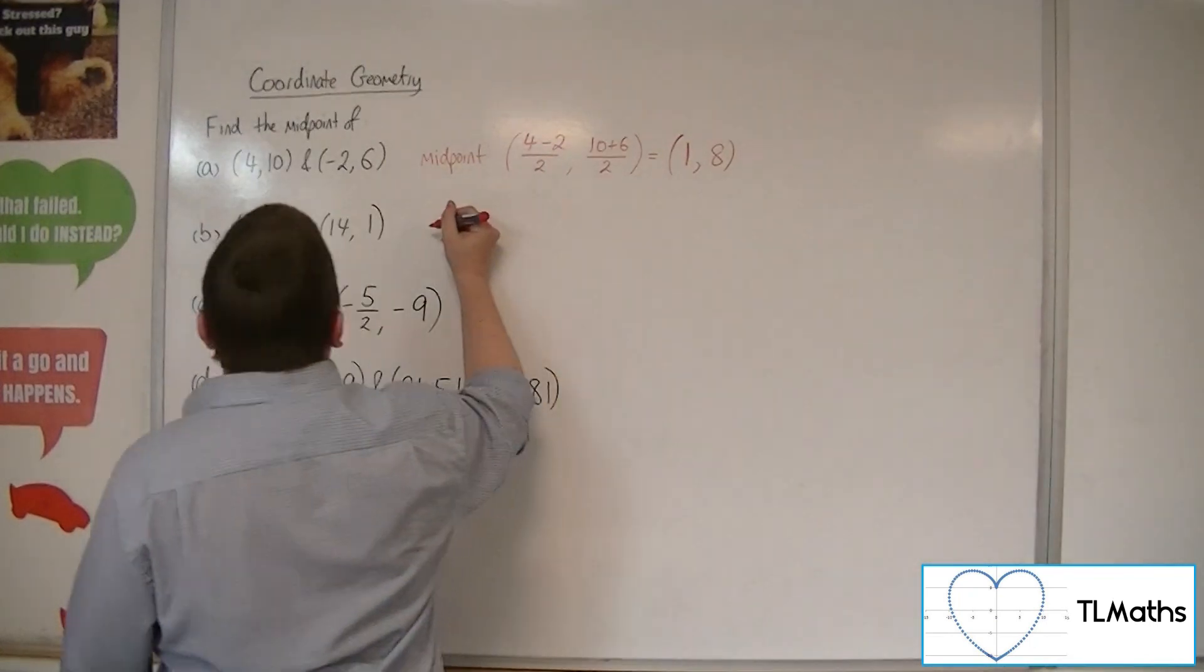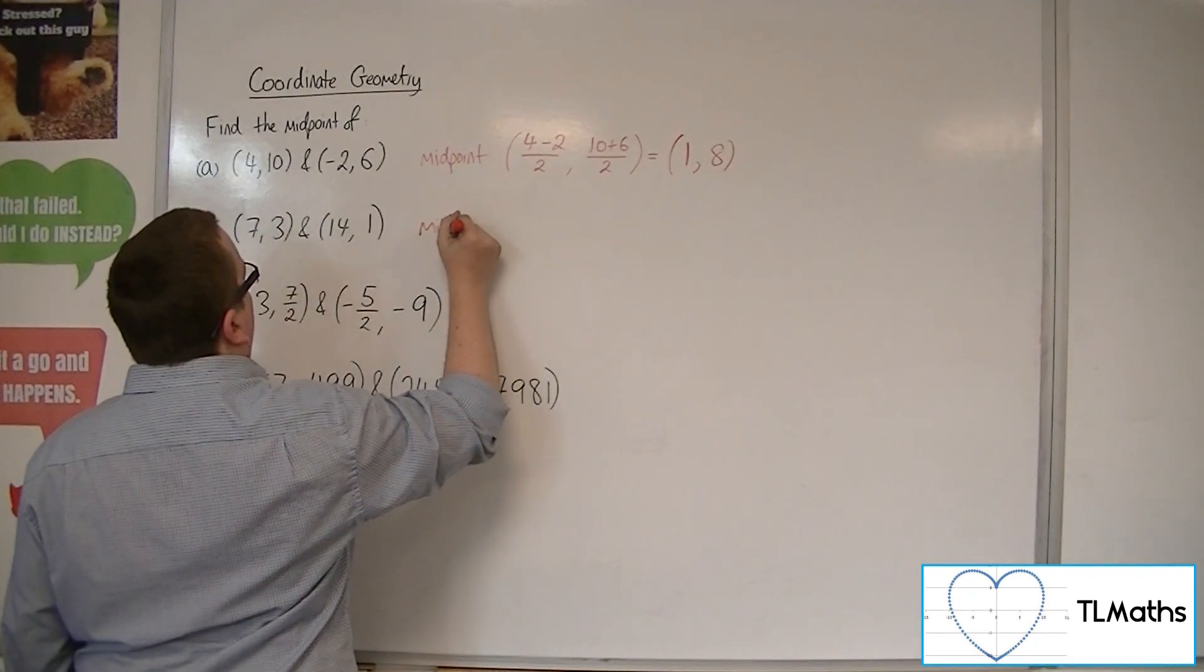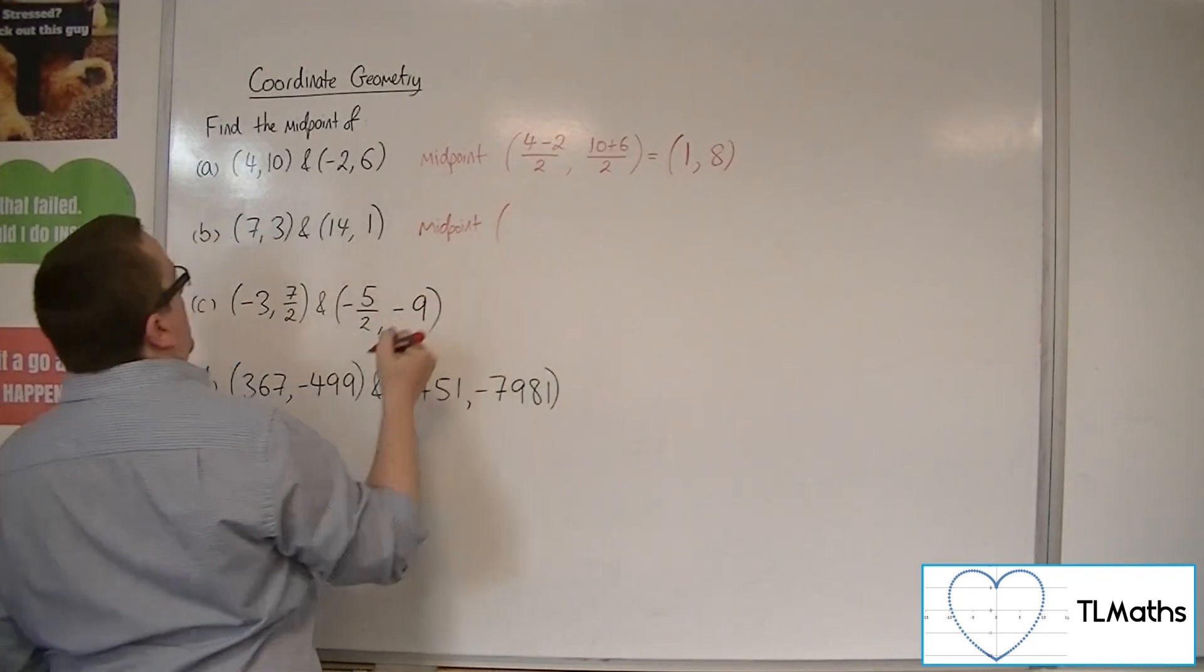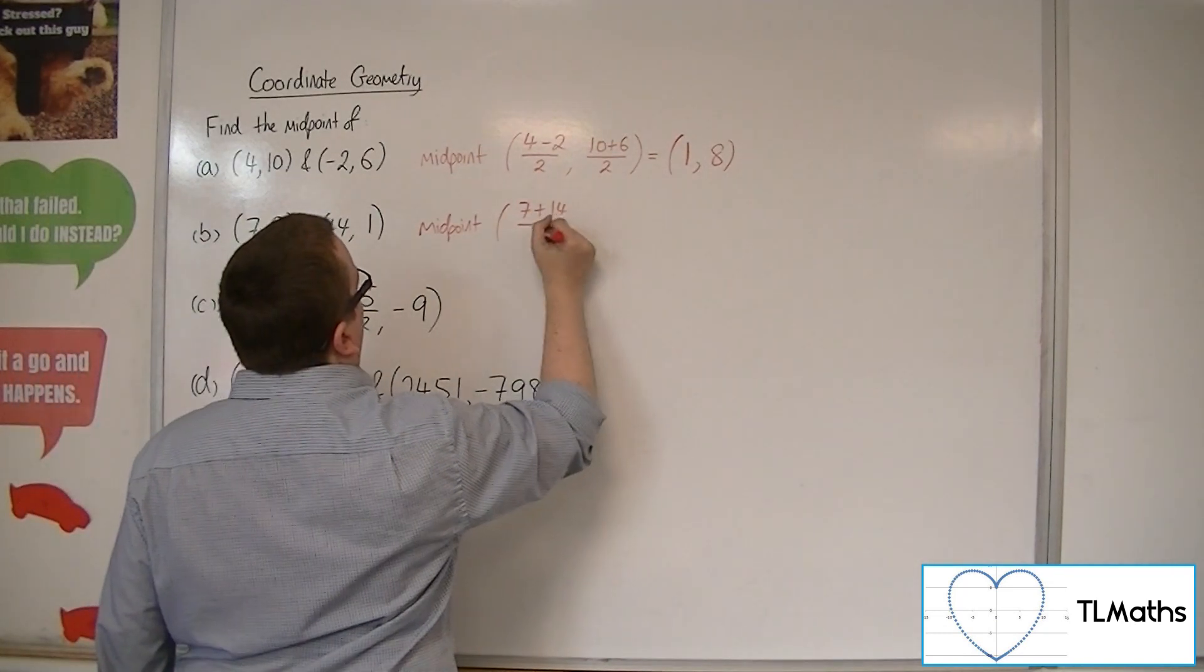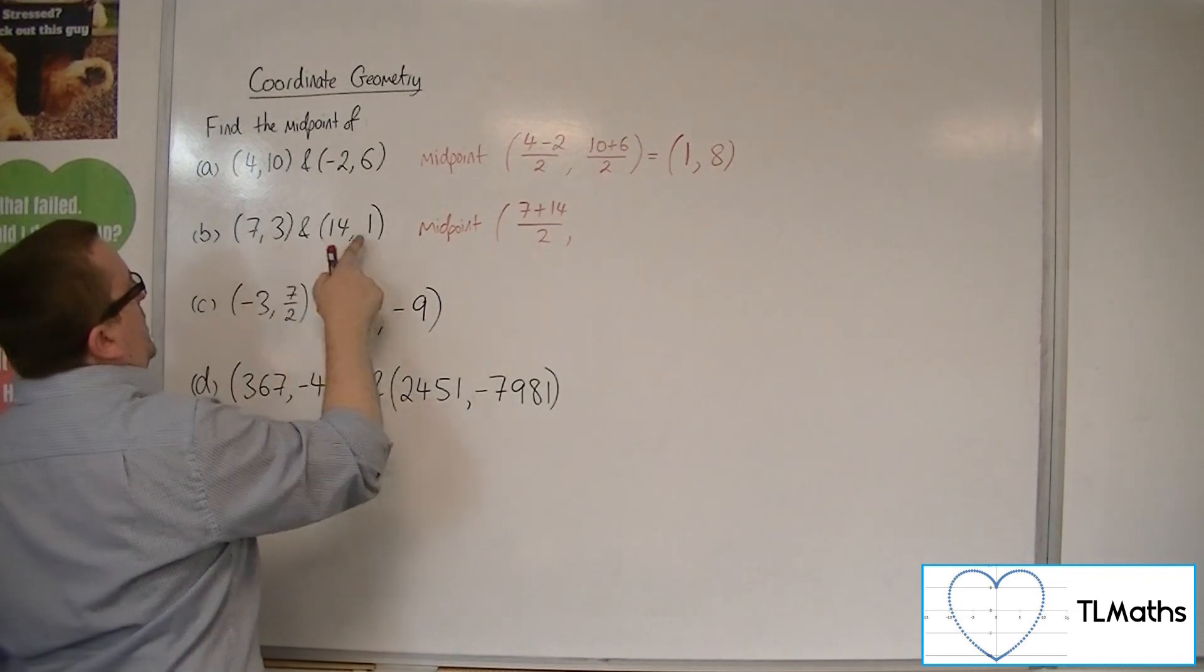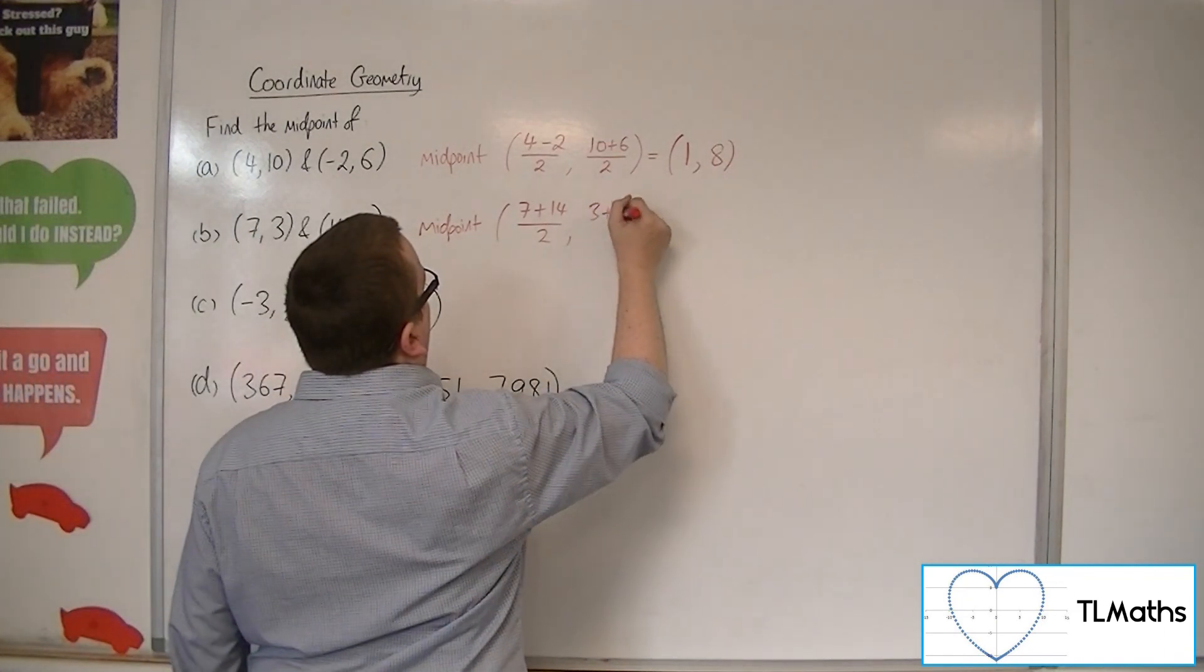For B, we have 7, 3, and 14, 1. So 7 plus 14, over 2. 3 plus 1, over 2.